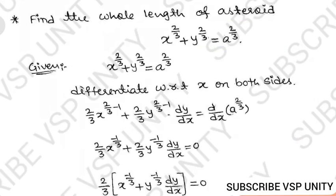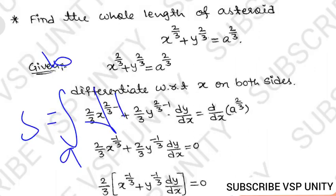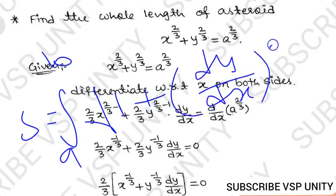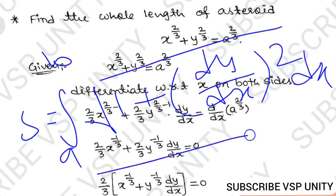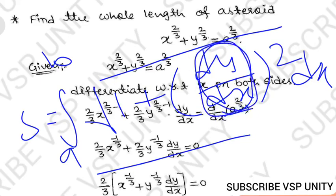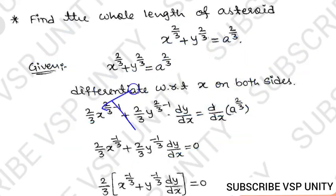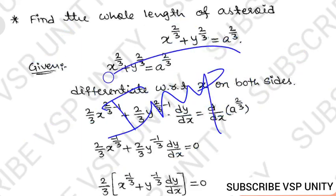We have a formula to find the length of an arc or given curve: S = integral from a to b of √(1 + (dy/dx)²) dx. So first we need to find dy/dx, and then determine what a and b are for this given curve. This is a very important and easy problem.